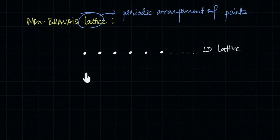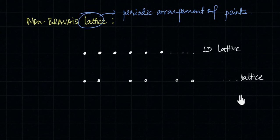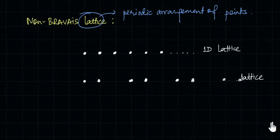What if I place two points close together, then a gap of two units, then two more points, and repeat? This is still a periodic arrangement of points, so it is a lattice. However, it is not a Bravais lattice: if we move from one lattice point to another, all the other points do not coincide. There is translational symmetry, but only over a larger interval — not at every lattice point. So this is a lattice, but not a Bravais lattice.